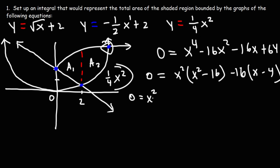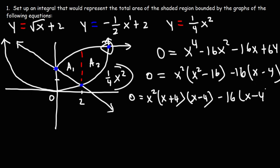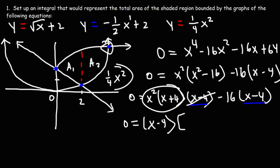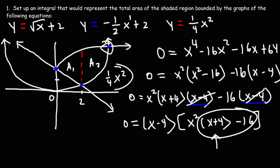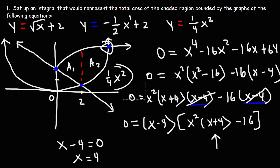Now x squared minus 16 is a difference of two squares, which factors as (x minus 4)(x plus 4). Notice we have a common factor of (x minus 4), so we factor it out. This gives (x minus 4) times (x squared times (x plus 4) minus 16) equals zero. Setting x minus 4 equal to zero gives x equals four, and that is the point of intersection we're looking for.